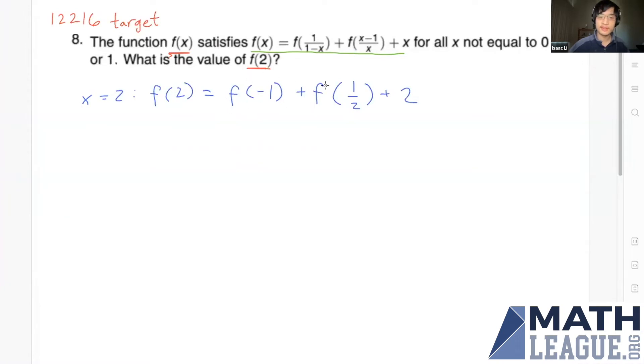How do we find these unknowns? We'll plug in -1 and 1/2 into the equation as well. Taking x = -1, we get f(-1) = f(1/(1-(-1))) = f(1/2), plus f((-1-1)/(-1)) = f(2), plus (-1).